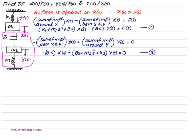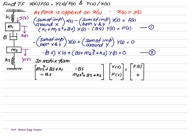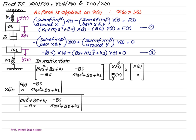We write these equations in matrix form, then apply Cramer's Rule to find the required transfer function. The matrix form is: [m1s² + bs + k1, -bs; -bs, m2s² + bs + k2] multiplied by [x(s); y(s)] equals [f(s); 0]. To find x(s), which is the first column element, we replace column 1 with [f(s); 0], keeping the second column [-bs, m2s² + bs + k2] the same, and the denominator is the determinant of this matrix.